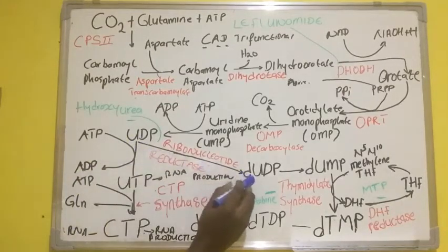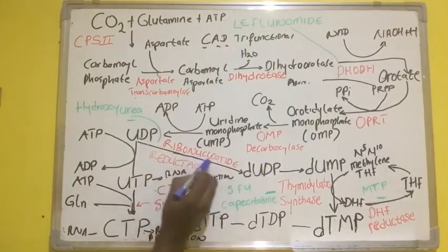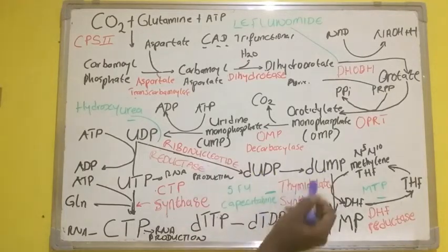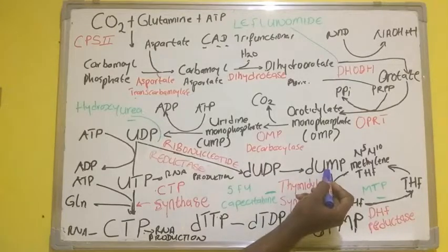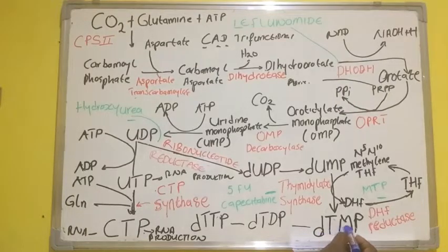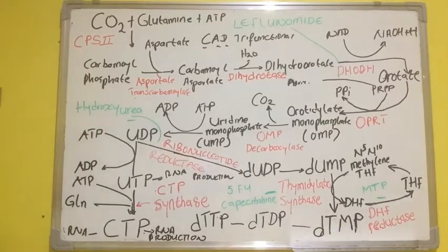UDP is being converted to deoxyuridine diphosphate through the enzyme ribonucleotide reductase. This dUDP is then converted to deoxyuridine monophosphate. The deoxyuridine monophosphate is then converted to dTMP, the deoxythymidine monophosphate.